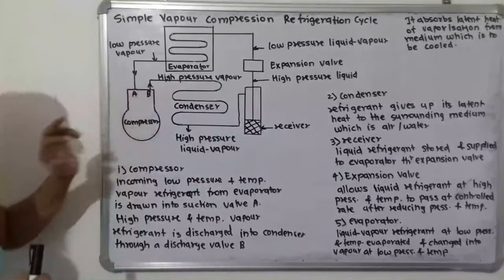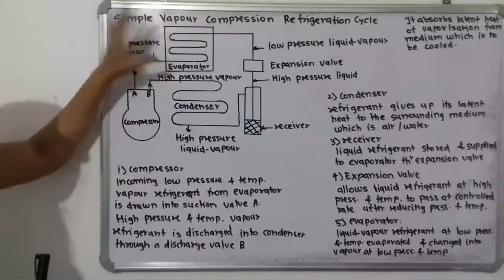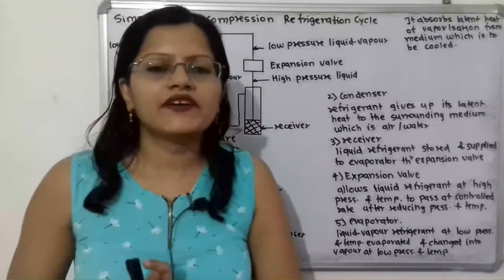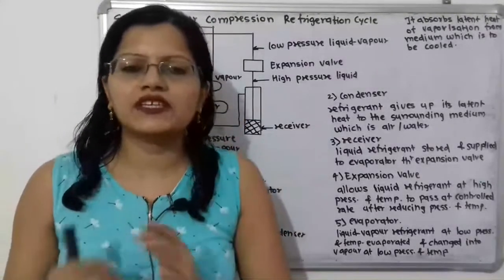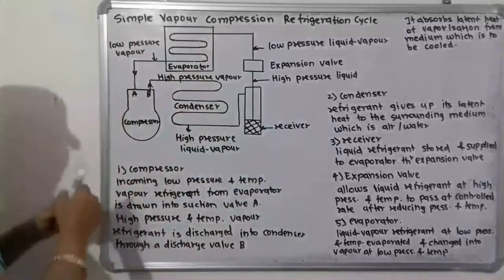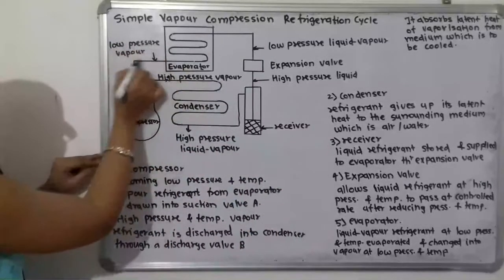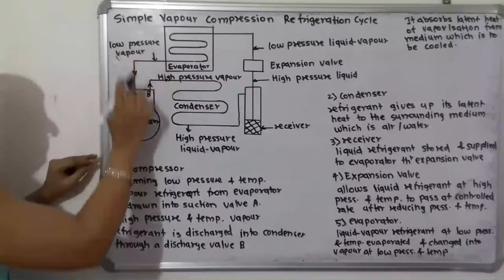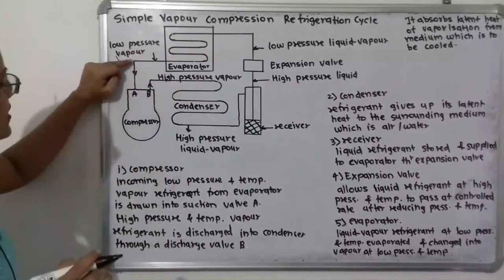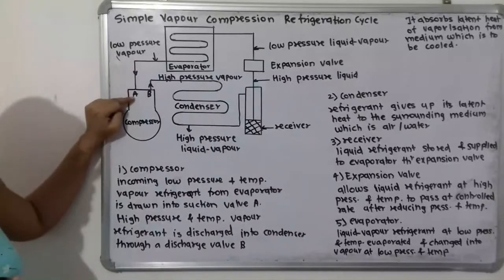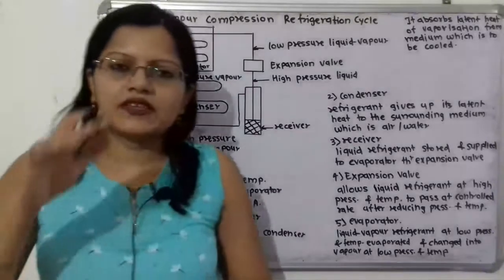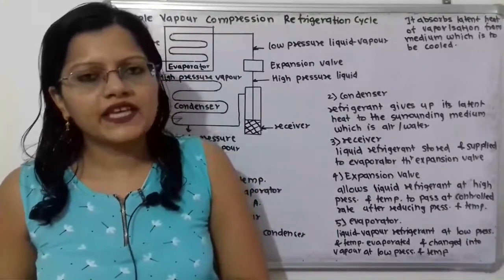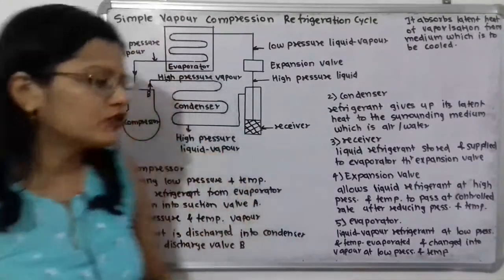Now we will first understand the working of the compressor. In this compressor there are two valves, and the previous part is the evaporator. The refrigerant is entering from the evaporator at low pressure and low temperature in vapor form. It enters through the suction valve A, and inside the compressor the compression process is taking place.